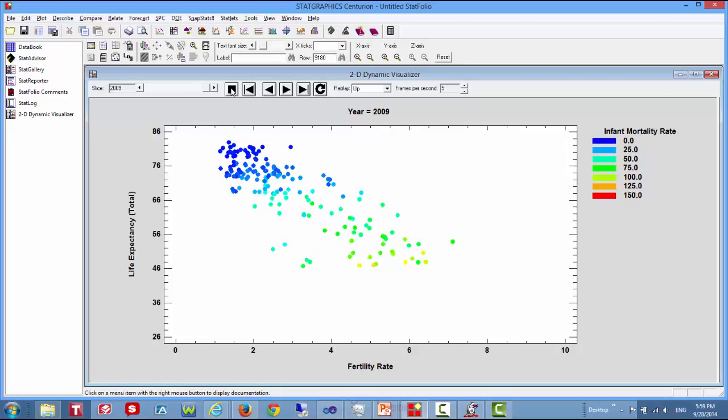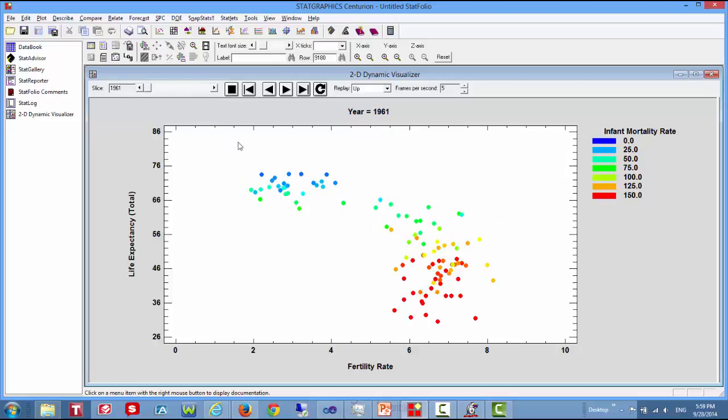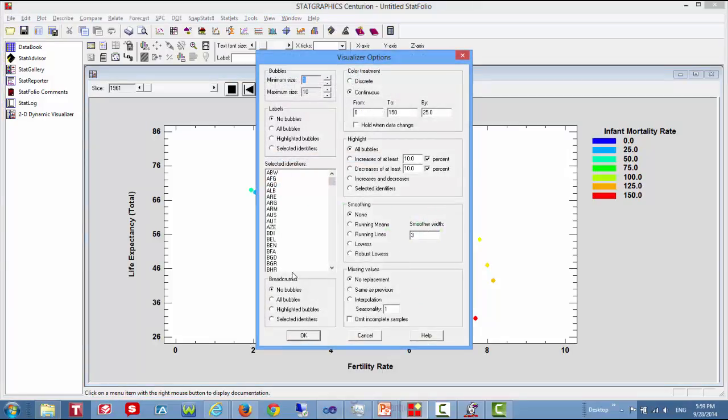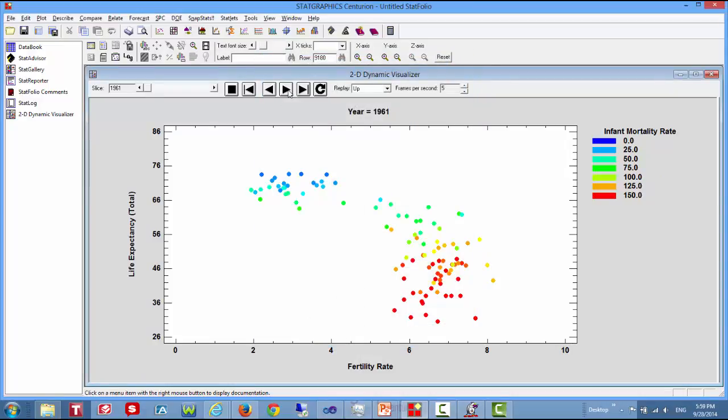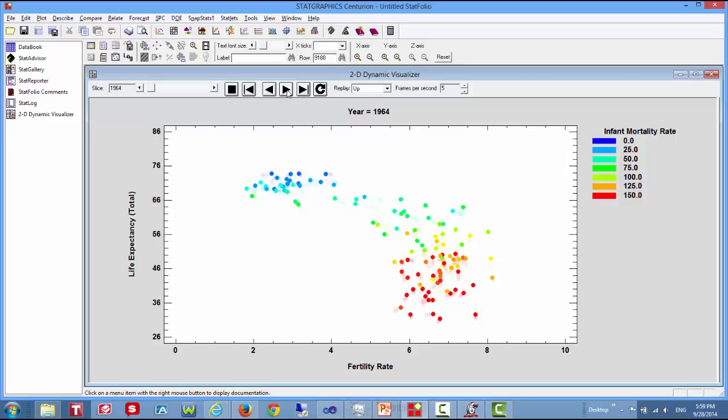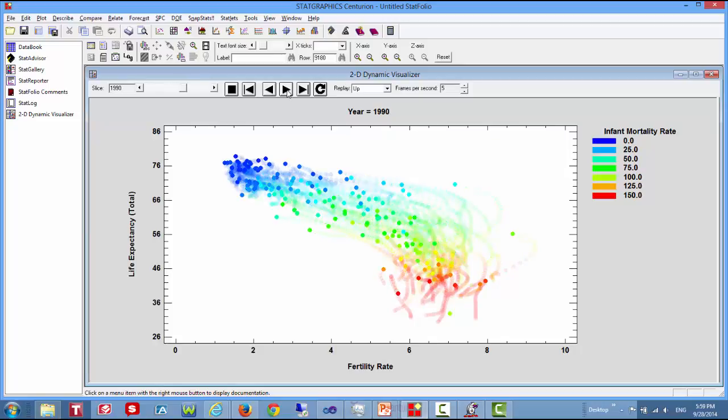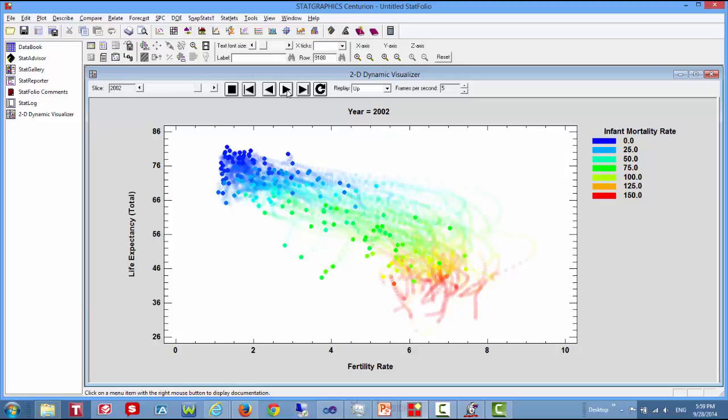There are a few options available on the visualizer statlets. One option is the ability to add breadcrumbs. If I ask for analysis options and say I want breadcrumbs for all of the points, what it will do is it will leave behind a trail as time evolves. This way, you can see the path that individual countries have followed. And you can see that there are a couple countries who made some fairly interesting paths, although at the end everyone seems to have joined the general trend of the world toward the upper left-hand corner.